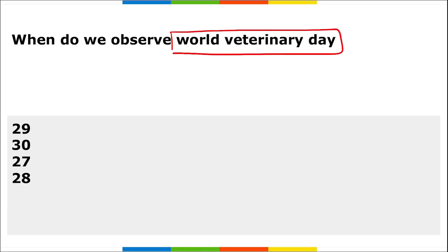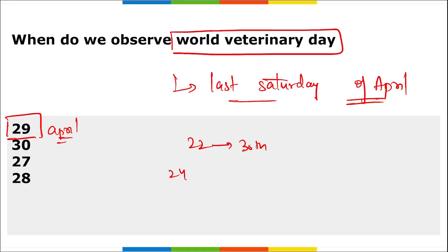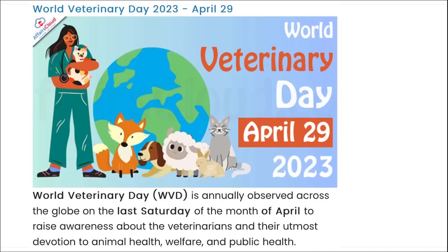World Veterinary Day is observed every year on the last Saturday of April. In 2023, it was observed on 29th April; in 2022 it was 30th April; and in 2024 it will be 27th April. The theme for the World Veterinary Day is 'Promoting Diversity, Equity and Inclusiveness in the Veterinary Profession.'